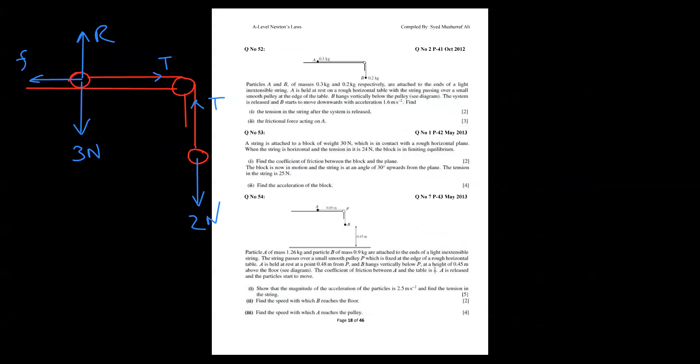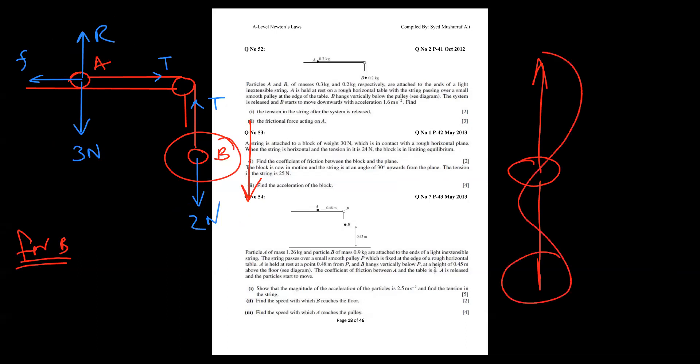For particle B, I will concentrate very carefully. The particle is B because it's moving downward. Moving downward, so common sense: 2 is the bigger force and tension is the smaller force. Because I'm talking about the B object, I will not involve 3 and not involve friction, because we have two particles - one particle B and one particle A.